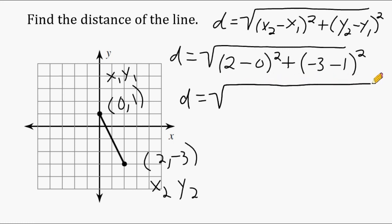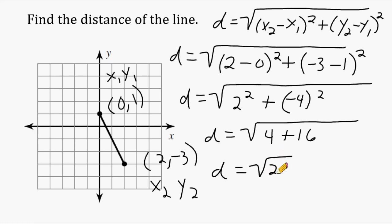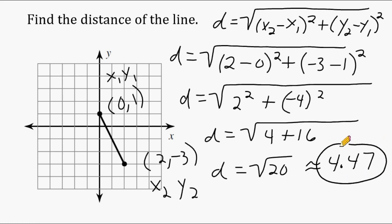Let's go ahead and solve what we have inside the parentheses first. So we have 2 take away 0, which is 2, and we have to square that difference. Then we have negative 3 minus 1, which is negative 4, so we're going to take negative 4 and square it. 2 squared is 4, and negative 4 squared is 16. So now we just have to add 4 and 16 together, which is 20. So we have to figure out what the square root of 20 is. The square root of 20 is approximately equal to 4.47 units when rounded to the nearest hundredths place.